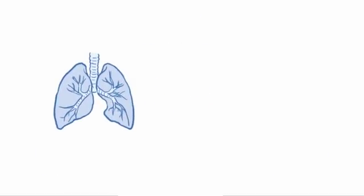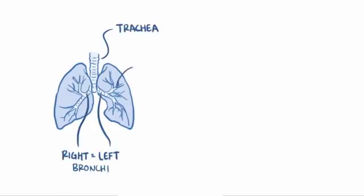So, if we take a look at the lungs, you've got the trachea, which branches off into the right and left bronchi, and then continues to branch into thousands of bronchioles.